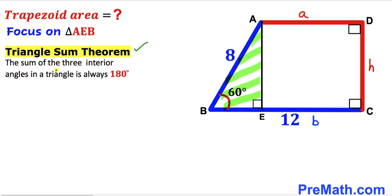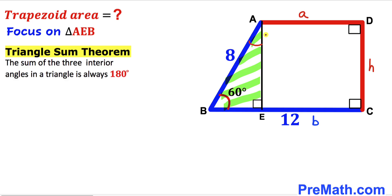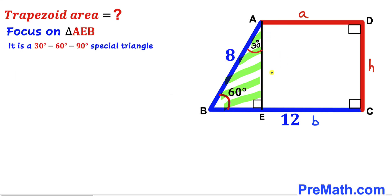According to the triangle sum theorem, the sum of three interior angles in a triangle is always 180 degrees. In triangle AEB, the angle at E is 90 degrees and the angle at B is 60 degrees, so angle BAE has got to be 30 degrees. This means triangle AEB is a 30-60-90 special triangle.